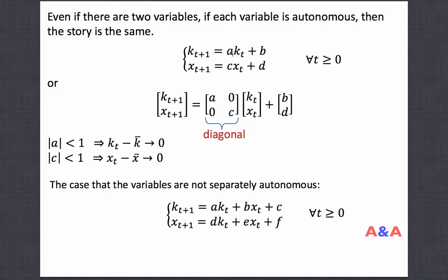If the slope a is smaller than 1 in absolute value, then k_t will converge to its steady state k-bar. If c is smaller than 1 in absolute value, then x_t converges to its steady state x-bar.